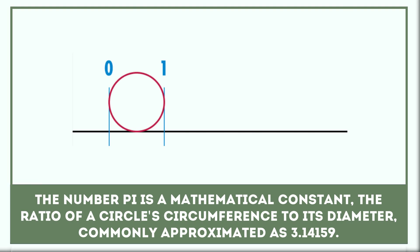The number pi is a mathematical constant, the ratio of a circle's circumference to its diameter, commonly approximated as 3.14159.